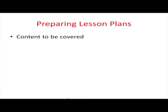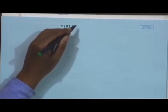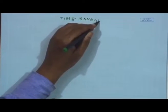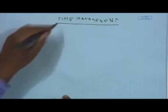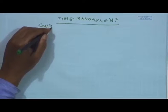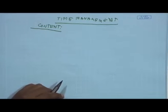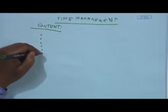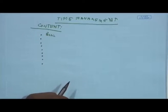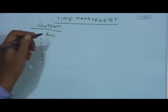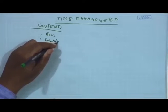When preparing a lesson plan, you decide about the contents to be covered. For example, in a time management program, the content could include: the basics of time management, why time management is important, how to effectively utilize your time, the purpose and benefits of time management training. Another content area could be identifying time wasters.